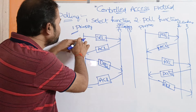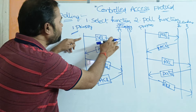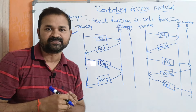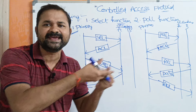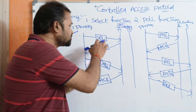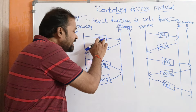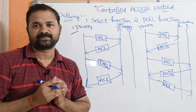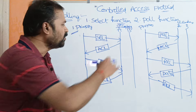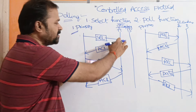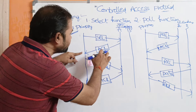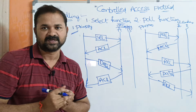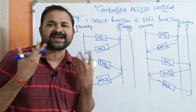The primary device sends a select (SEL) frame to secondary device A to check whether A is free or not. This SEL frame contains the address of A. Now let us assume that A is free.